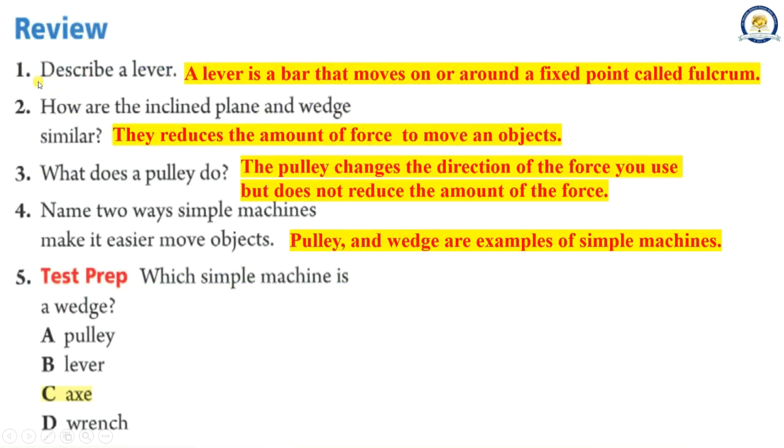Review. 1. Describe a lever. A lever is a bar that moves on or around a fixed point called fulcrum. 2. How are the inclined plane and wedge similar? They reduce the amount of force to move objects. 3. What does a pulley do? The pulley changes the direction of the force you use but does not reduce the amount of the force.